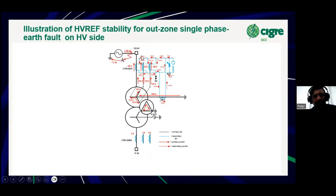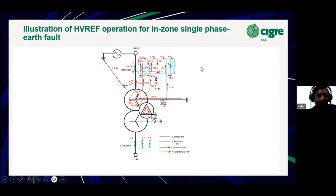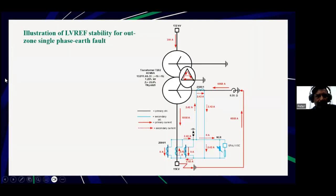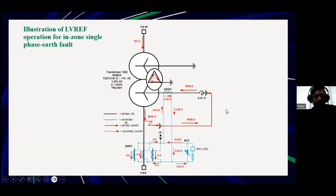For an HV-REF fault on the HV side, the demonstration shows how currents circulate within the protection and the relay sees zero current for an external fault. This is for an actual in-zone fault on the HV side — here the scenario changes and the relay will see a current. This exercise can be done by anybody just using Kirchhoff's law and basic understanding of the circuitry. Similarly for the LV-REF protection — a demonstration of an external fault shows how the relay is stable, and a demonstration for an in-zone fault shows how the relay sees the current.